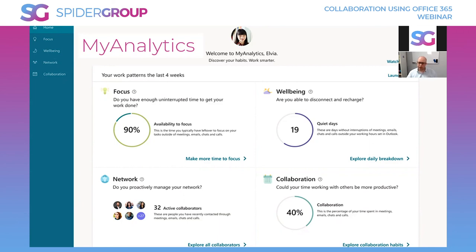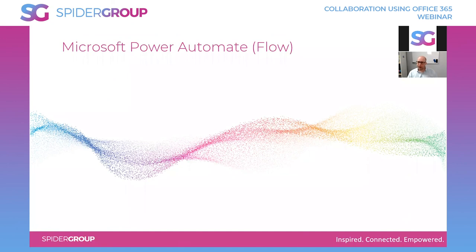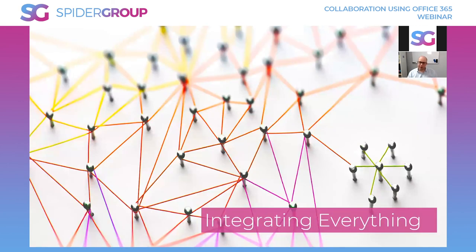Power Automate — formerly called Microsoft Flow — allows you to take data in the Microsoft platform and trigger actions based on events, removing a lot of data-entry drudgery. It ensures data exists wherever it needs to be in your system. We'll be doing another webinar going deeper into Power Apps and Power Automate, so I won't touch on it too much here, but it's a really great product for power users.